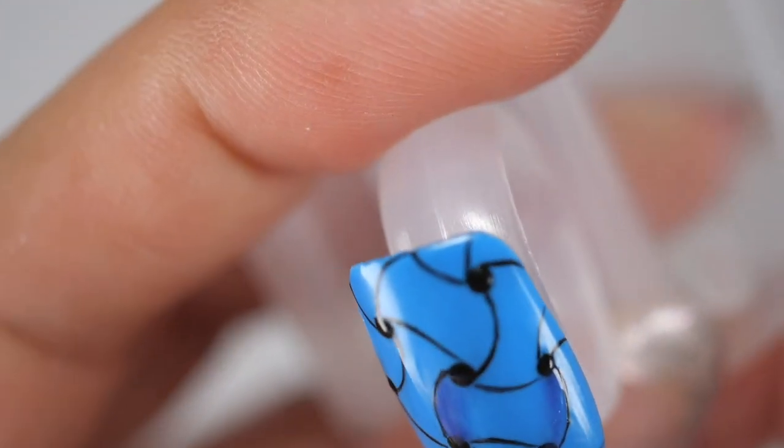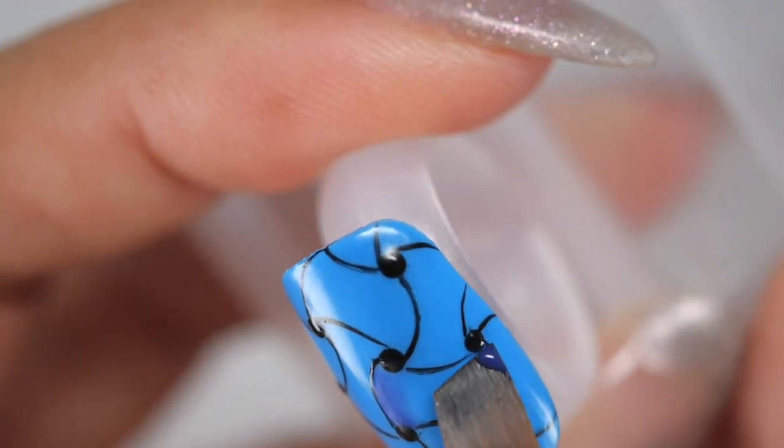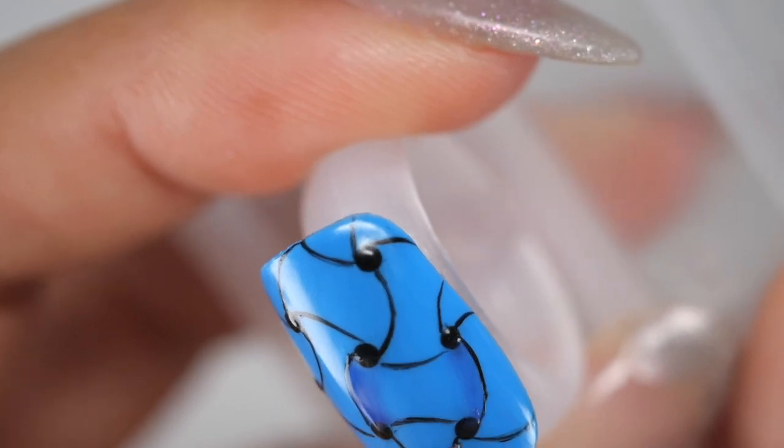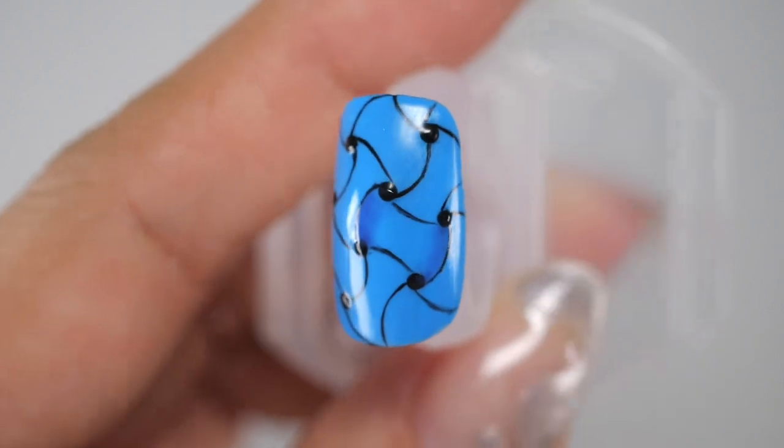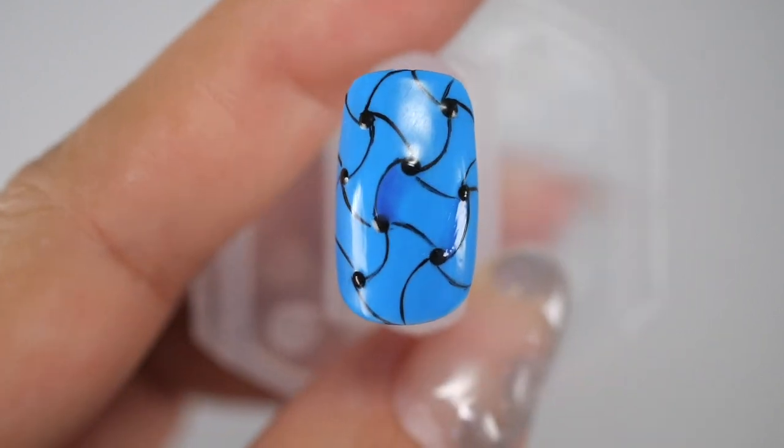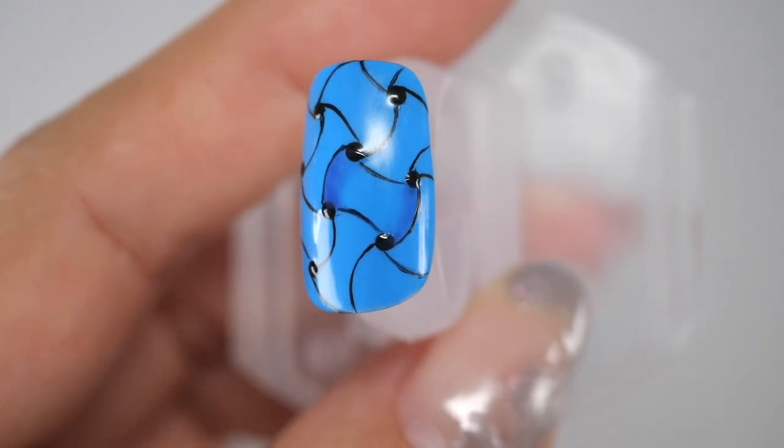If you use another color for the base color, you can choose a color darker than that color or mix a little bit of black to make it darker. Draw the shadow only on the inside of the curve like this.